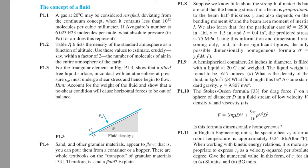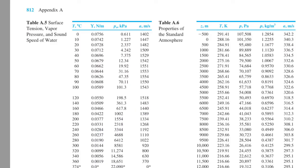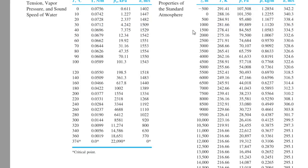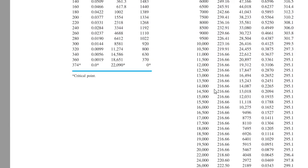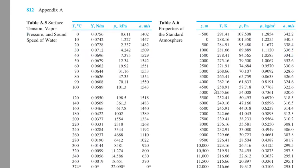Let's take a look at Table A.6. This is Table A.6 in Appendix A. This doesn't help very much, actually, because we'll be using a formula which approximates the density of the air as a function of the height in the atmosphere.